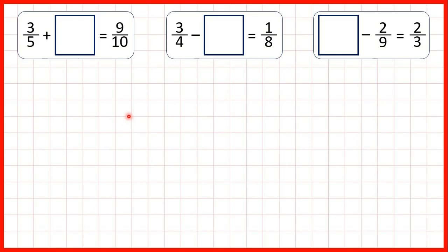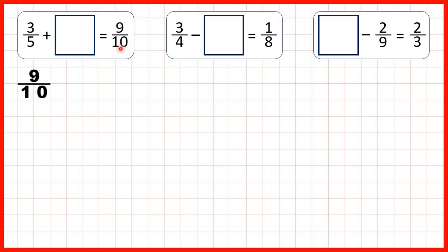Here we have some missing fraction addition and subtraction problems. We can use the same methods to work out our missing fractions as we use to work out missing numbers when they're whole numbers. First, 3 fifths plus something equals 9 tenths. Whenever we have a missing number or a missing fraction in an addition problem, we always use subtraction to find our missing number. So we need to work out 9 tenths minus 3 fifths, and that will give us our missing fraction.